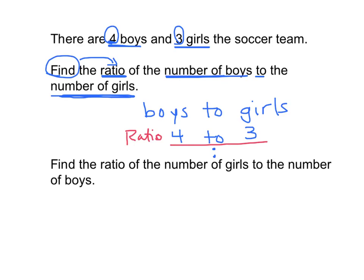Now there's another way to write the same ratio, but instead of using the word 'to', we use the symbol, the colon, but we read it as 'to' as well. So even though you see this symbol right here, these two dots, you'll read it as the word 'to'.